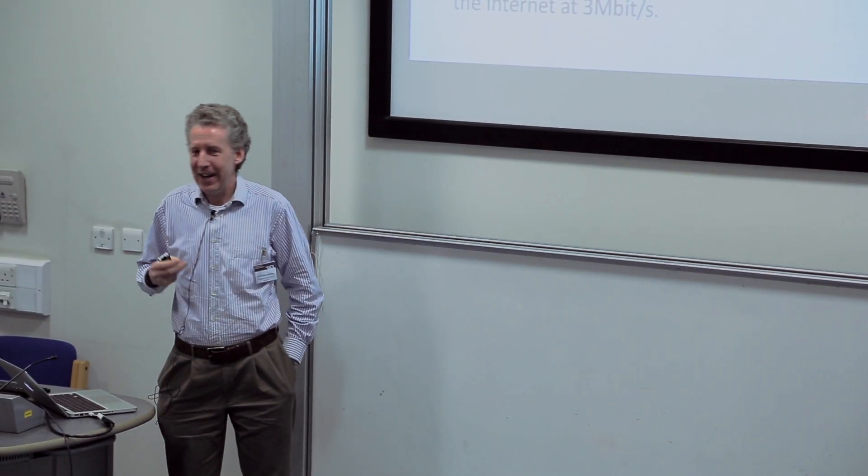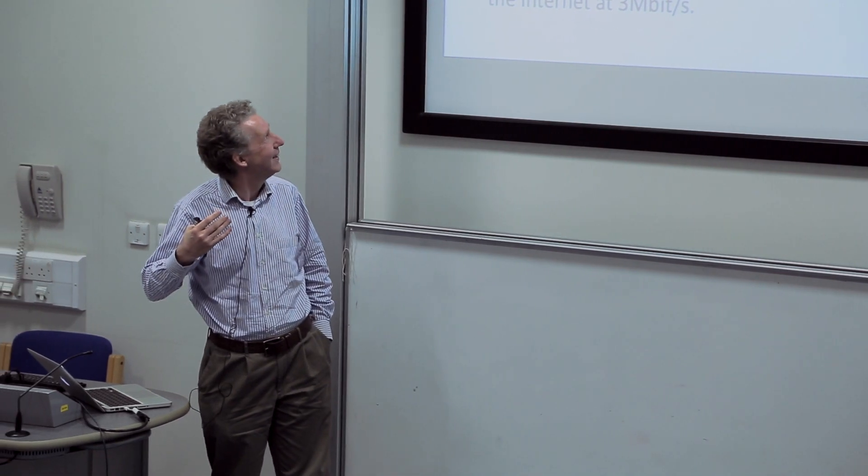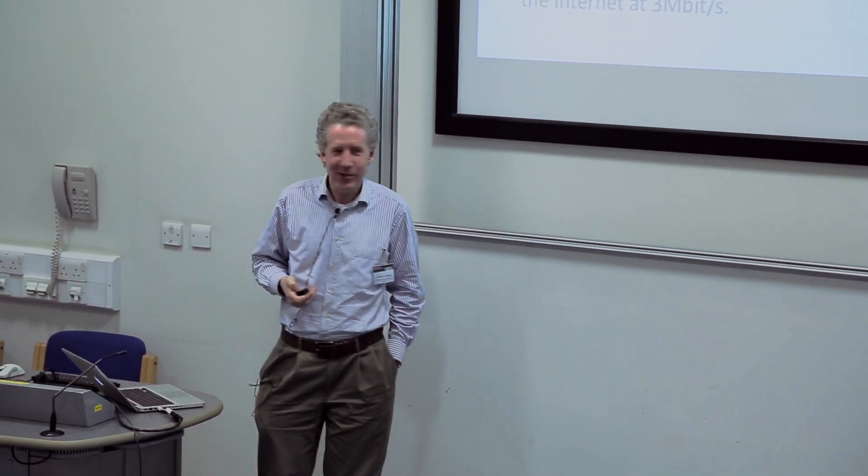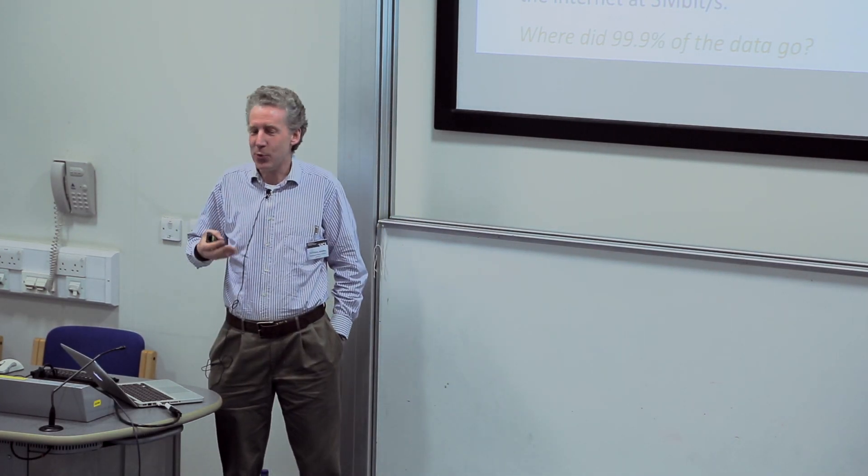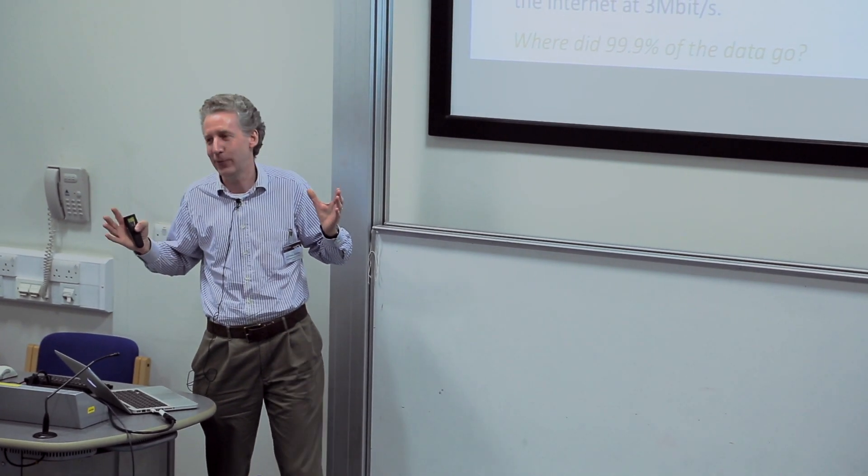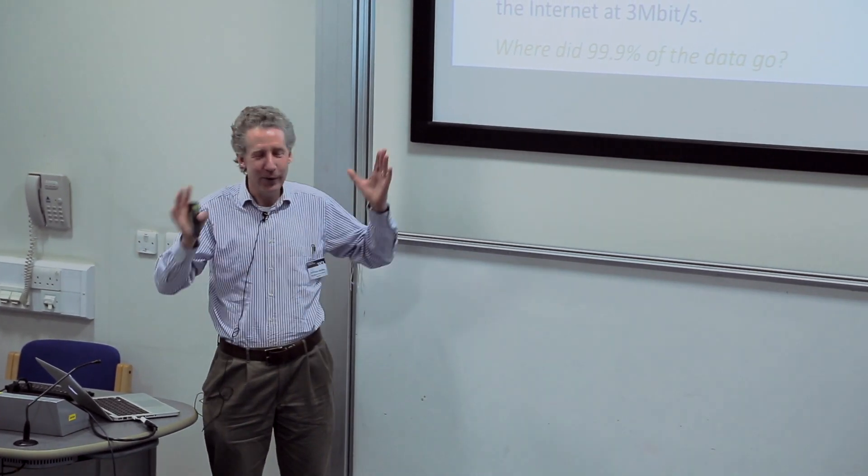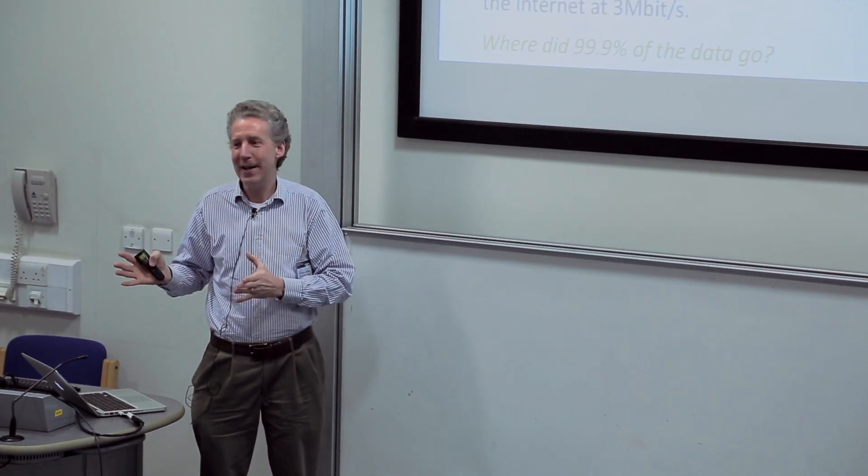If you look at what they're actually transmitting with a modern video compression algorithm, we're getting good quality high-definition live interactive video conferencing at three megabits per second. Okay, three orders of magnitude. So where did the other 99.9% of the data go? It's a pretty good question. It's really hard to do that. You can't see the difference, or you can barely see the difference, between the full three gigabits per second and three megabits per second. And that's a pretty impressive result.